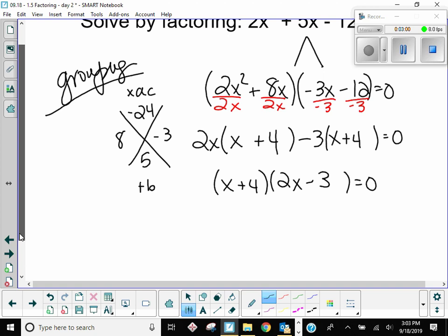And from here, we can solve our zero factor property set. Remember, if you have an a thing times the b thing that equals zero, then you can set the a thing equal to zero, and the b thing equal to zero. And then solve those.